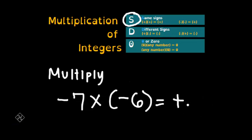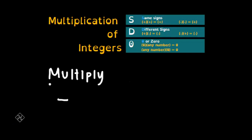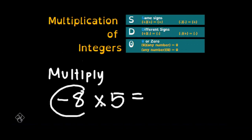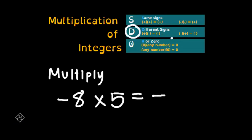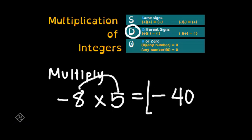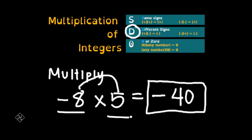The third example: negative eight times positive five. We look at the sign of the first term — negative eight is a negative integer, and five is a positive integer. Therefore, they have different signs. According to the rule, when the signs are different, the product is always negative. So eight times five equals 40, and our answer is negative 40 because the signs of the factors are different.